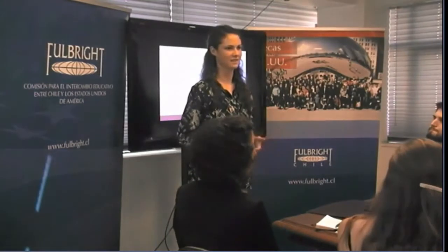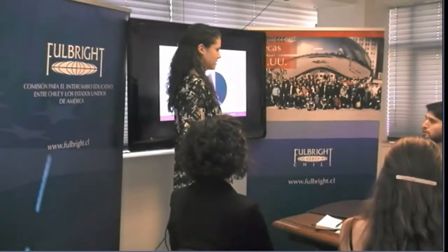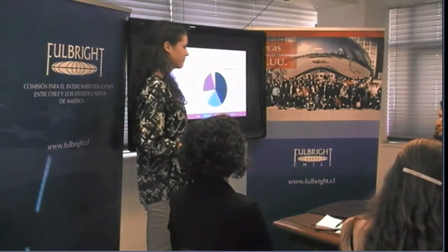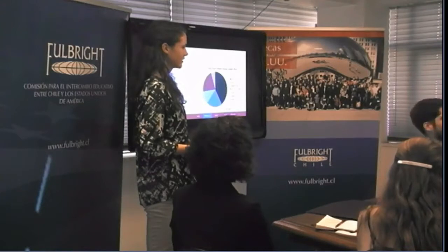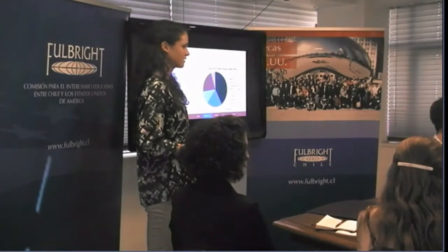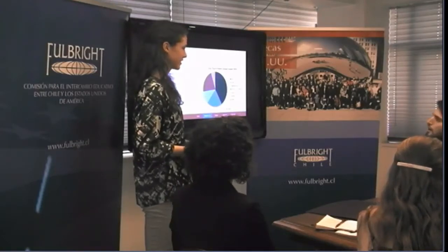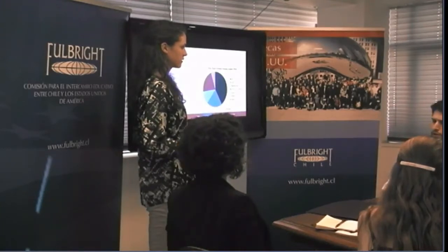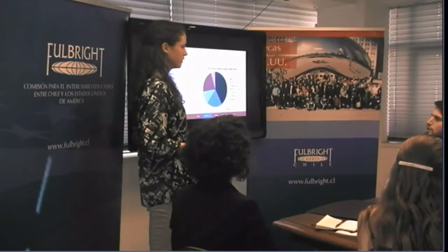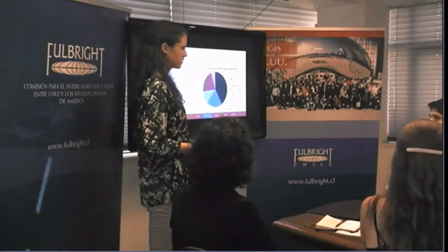Another attendee, also working at La Católica in the energy space, asks: When people think about distributed solar, they usually think about solar panels on rooftops. In Santiago, where some areas are very densely developed, say you had a really tall apartment building — how would you actually make that installation? Could you do a rooftop situation, or would you have to find some nearby undeveloped area?